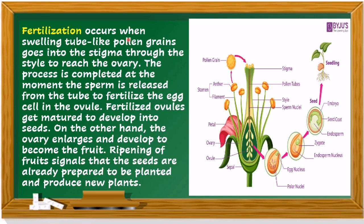Fertilization occurs when the pollen tube grows into the stigma, through the style, to reach the ovary. The process is completed at the moment the sperm is released from the tube to fertilize the egg cell in the ovules. Fertilized ovules mature and develop into seeds, while the ovary enlarges and develops to become the fruit. Ripening of fruit signals that the seeds are already prepared to be planted and produce new plants.